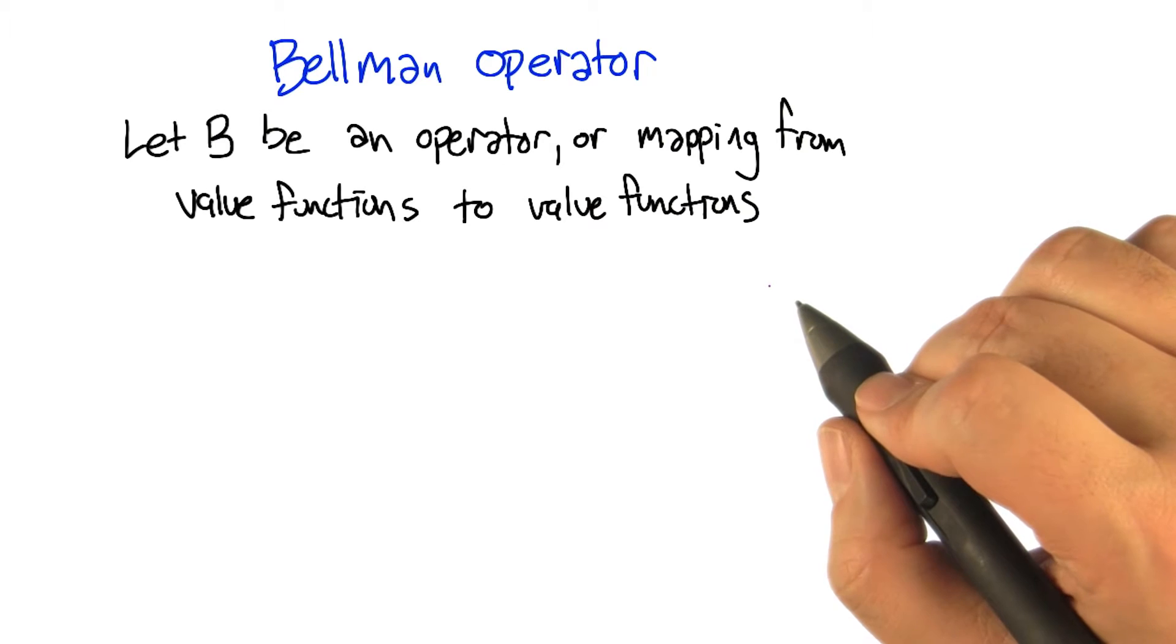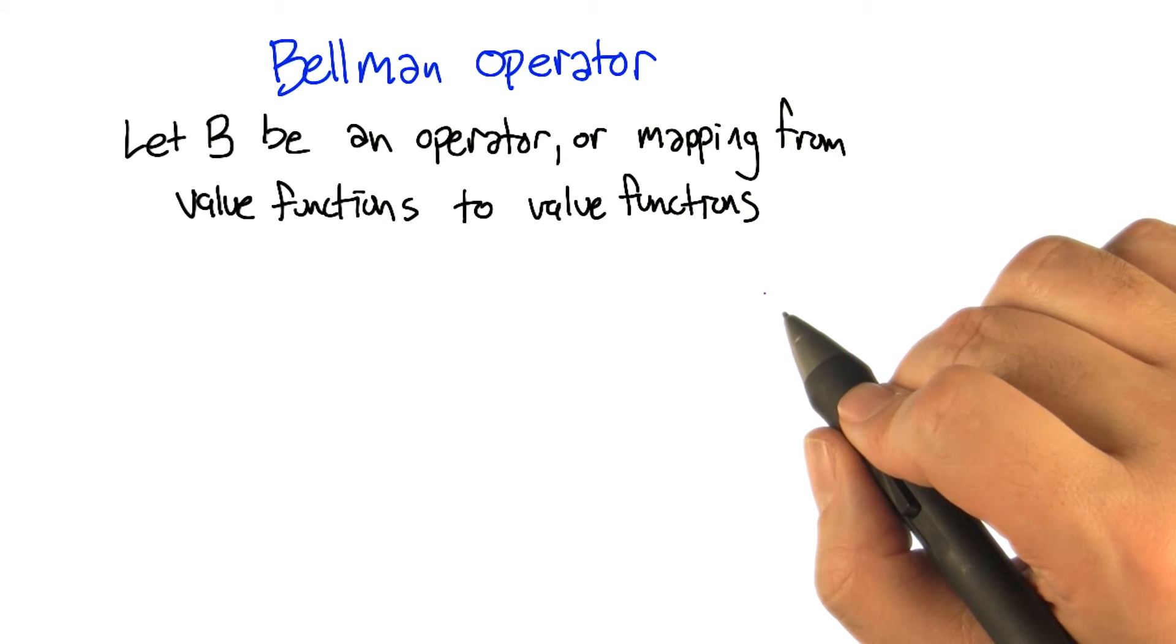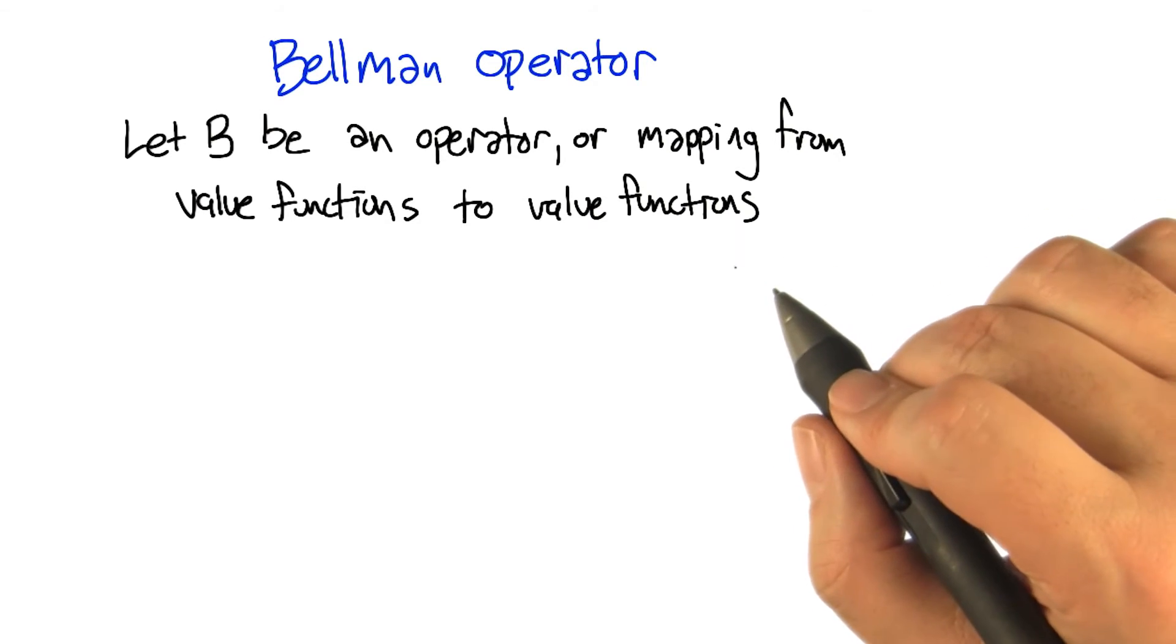Does this operator have to have any particularly interesting properties? We're going to prove that it has some properties, but first let's define what it is.